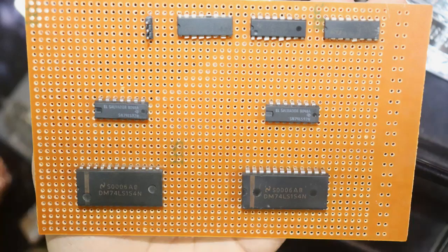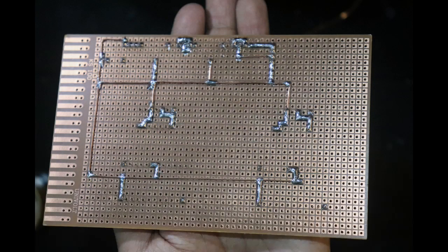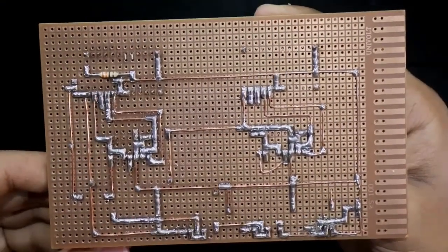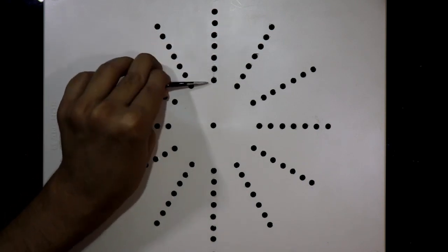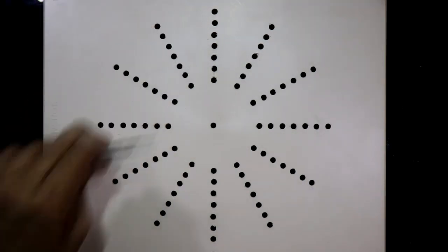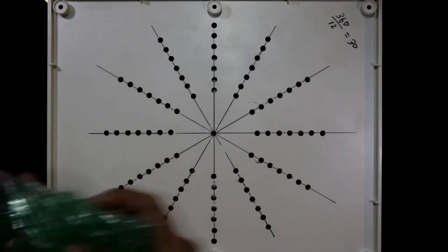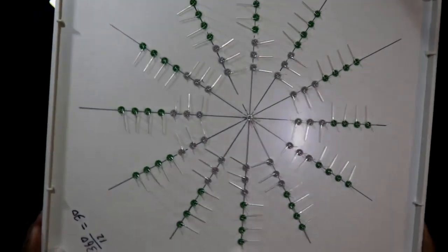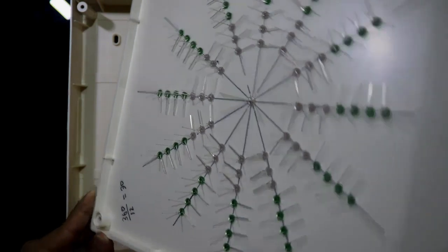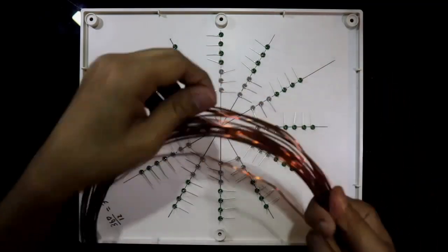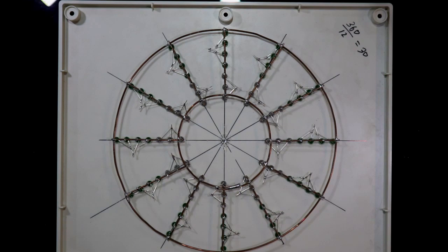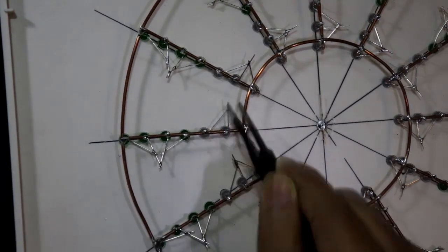All ICs are soldered; positives and negatives are connected together — this is the internal connection of the circuit. Three LEDs will be for the seconds hand and four will be for the minutes hand. LEDs are placed and I bent all the negative pins of the LEDs so we can solder the positive pins easily. For connections I use copper wires — positives are connected, and green and white negatives are connected separately.